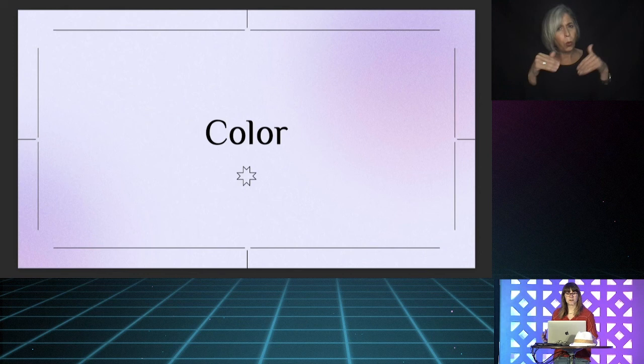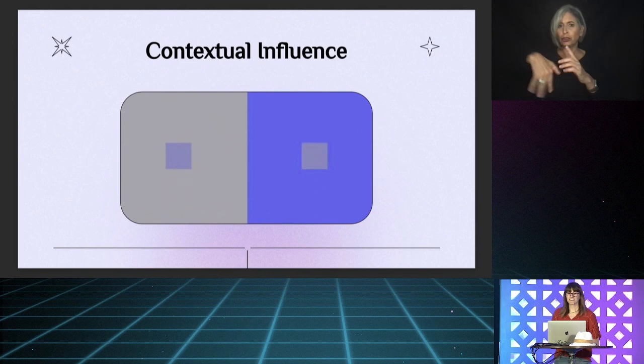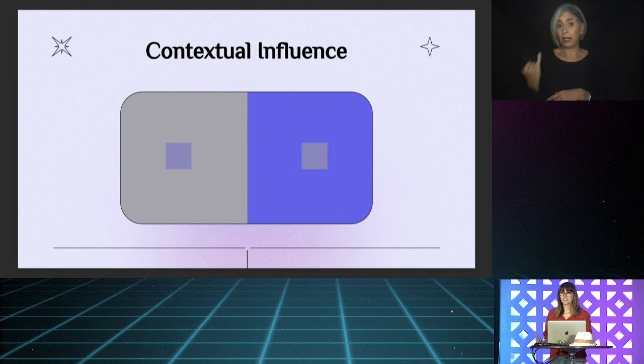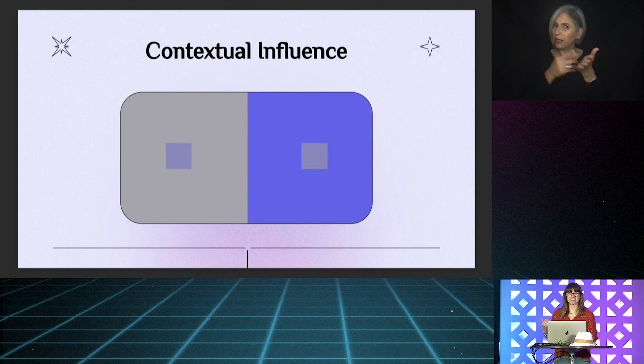First things first: color. Color is complex because the way we perceive and interpret a color is based entirely on the other colors around it. For example, at first glance, these two squares might seem to be different colors. But in truth, the two smaller squares are exactly the same color. Depending on which background color it's paired with, our eyes will perceive the color differently. Having this contextual awareness is huge when it comes to our interfaces, because a color that looks one way in isolation will look completely different when it's put into a layout with other colors.